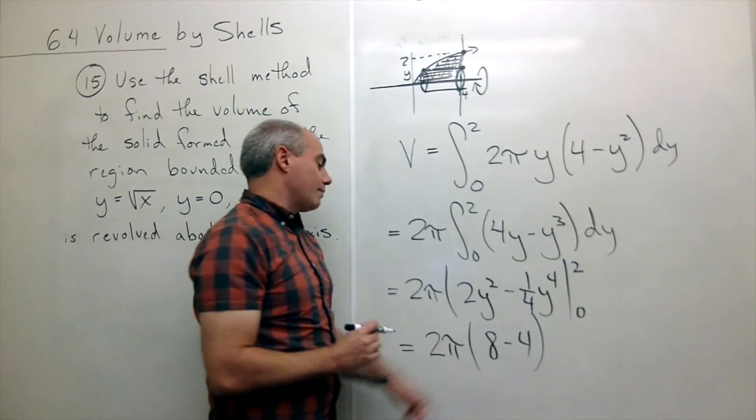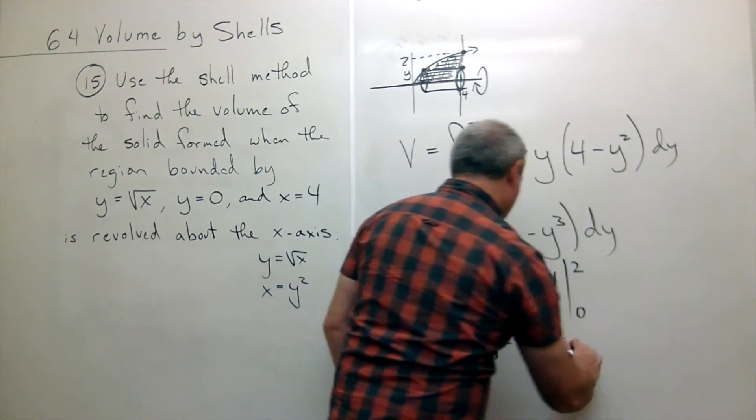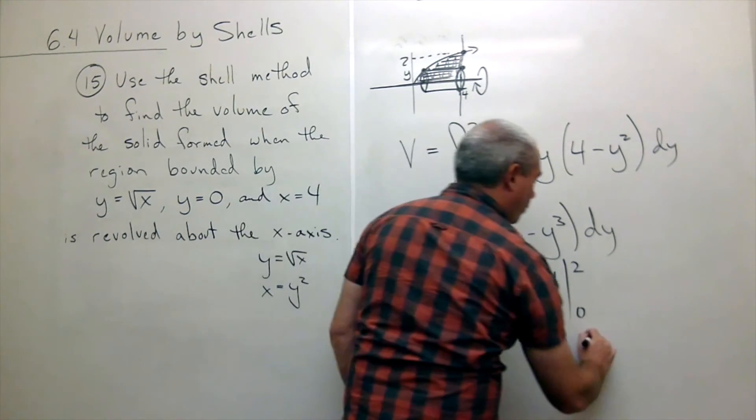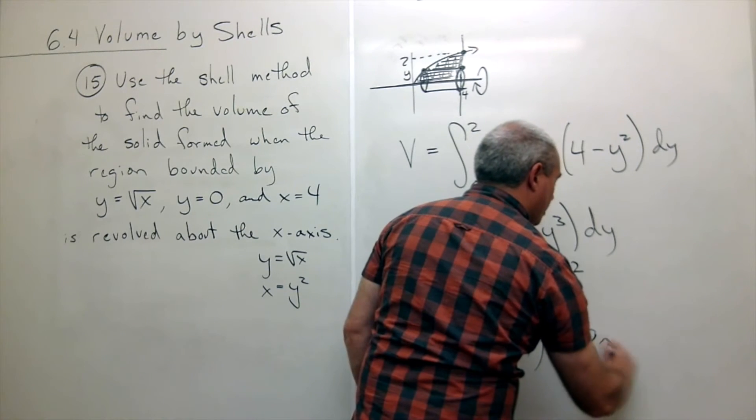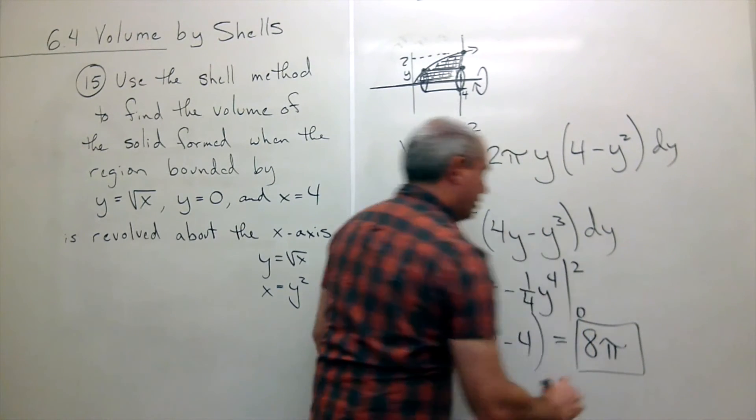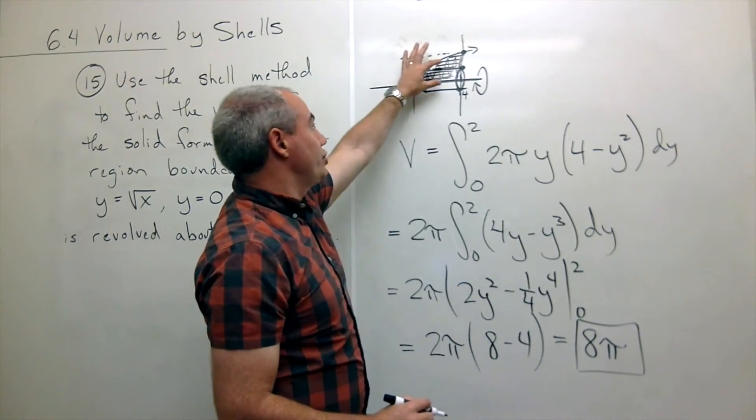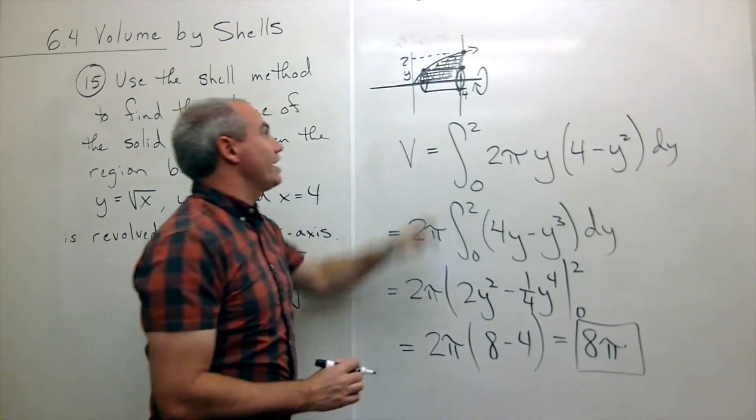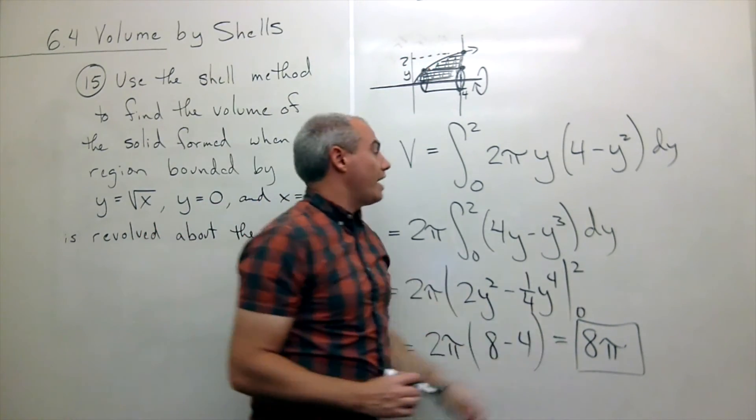I get 2 pi times 8 minus 4, which is 4 times 2 pi, or 8 pi. So the volume of the shape that I get when I rotate here is 8 pi.